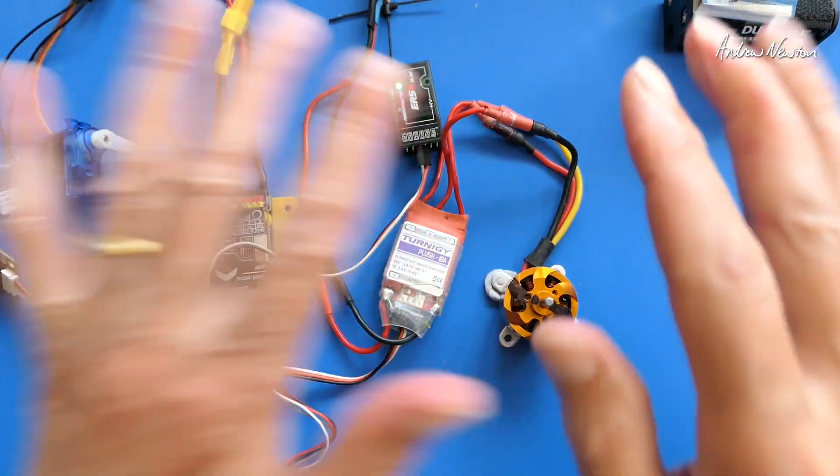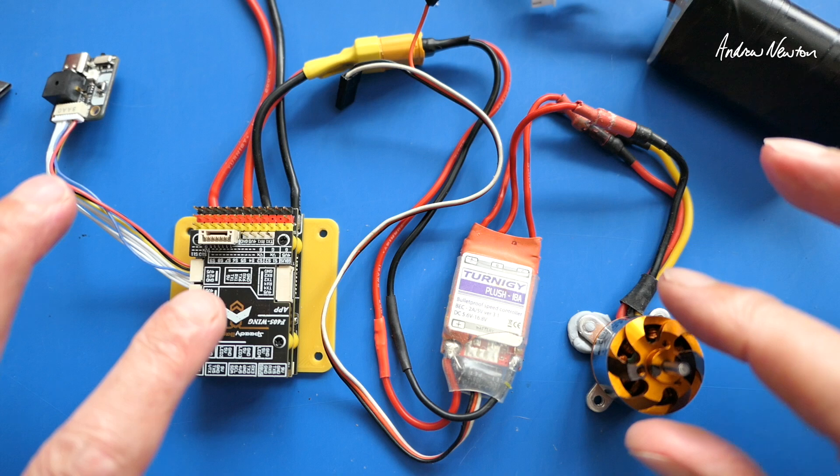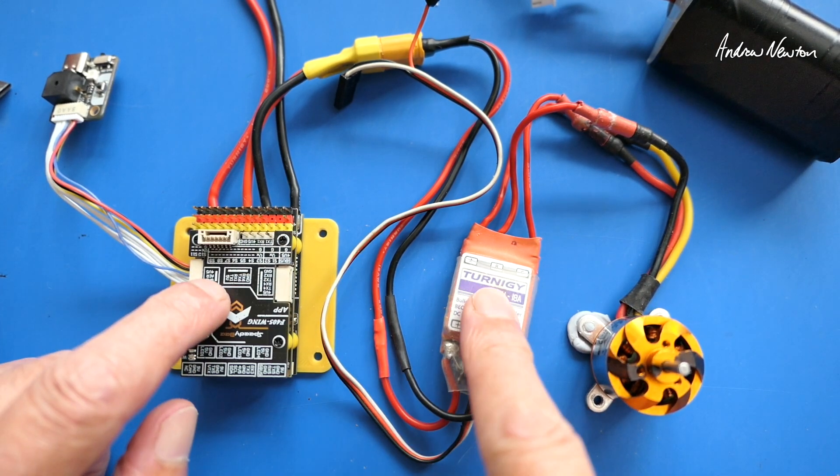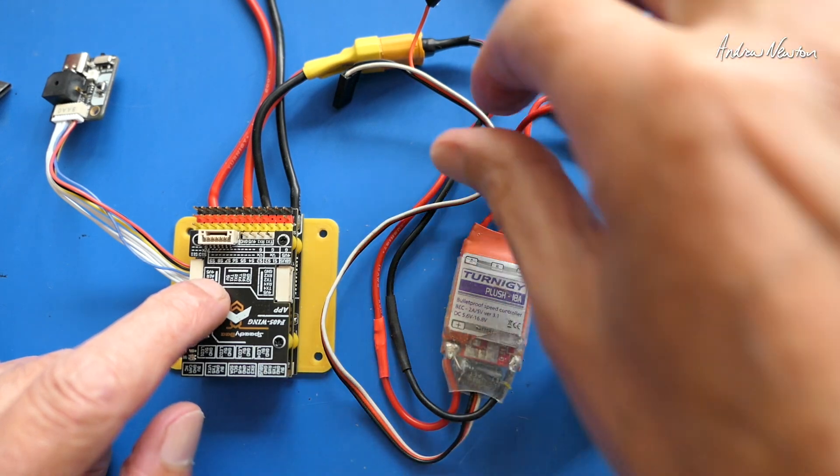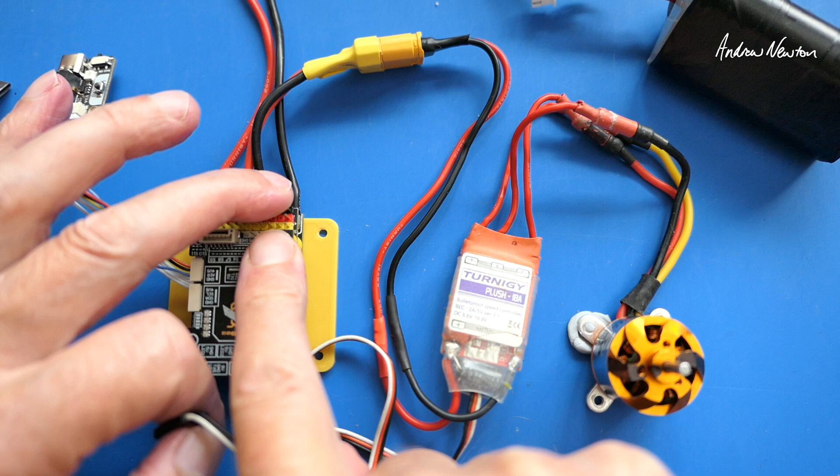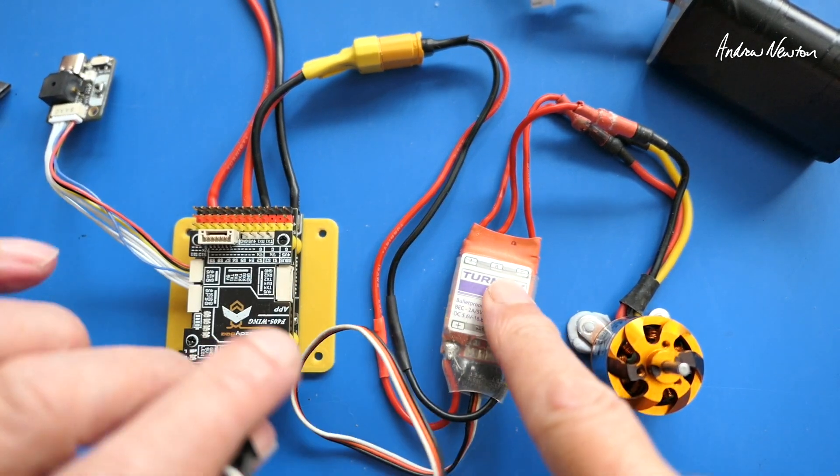That's the starting point. Now the next logical troubleshooting step is to make sure that the board is communicating with the ESC, and the range of PWM values produced by the board are matched by the ESC.